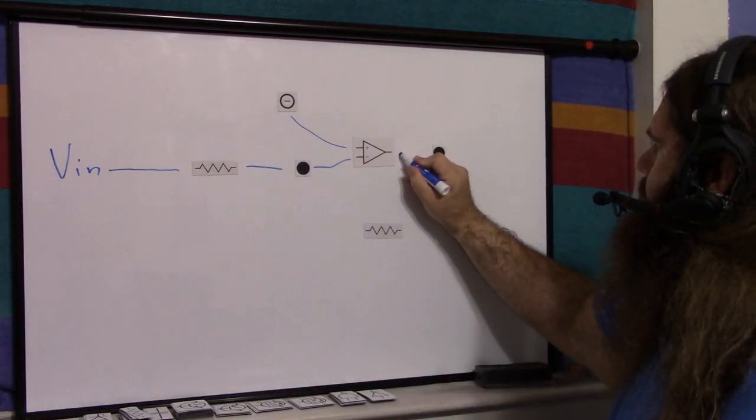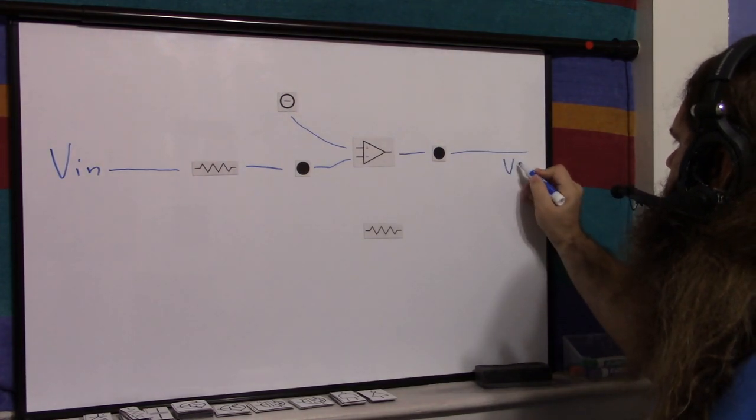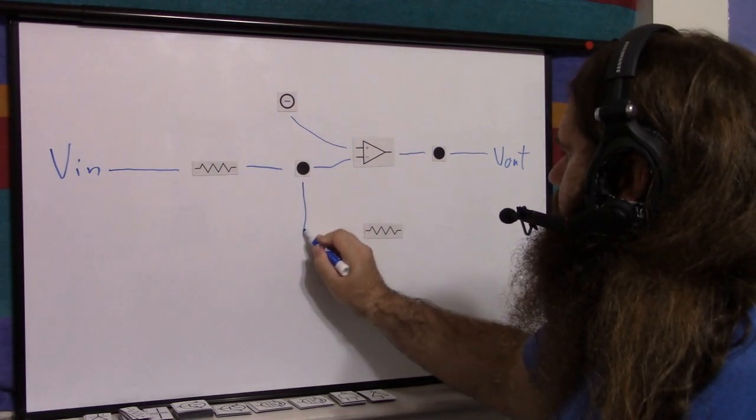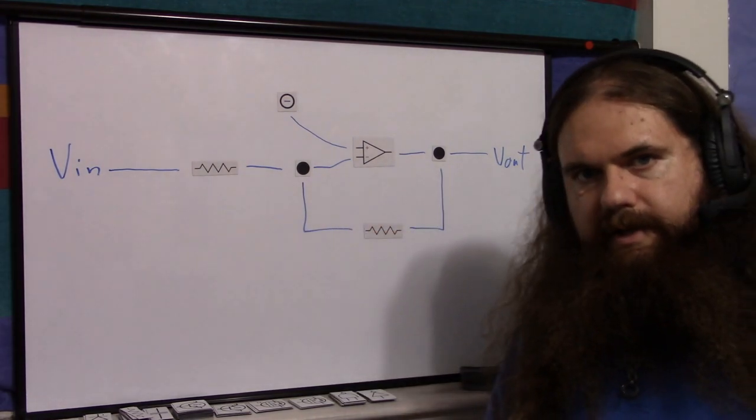Let's add one more resistor. Over here is the voltage out. We'll call it Vout. Input, output. This is the amplified and inverted. Let's connect this resistor through like this. Welcome to the land of feedback.